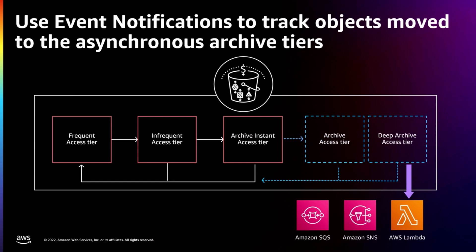We recently launched integration of event notifications with Intelligent-Tiering. You can now have applications that receive events when your objects are moved from a synchronous tier, which is immediately accessible, down to an asynchronous tier. In the media and entertainment industry, it's important to know which assets are immediately accessible and which are not. You can use event notifications when Intelligent-Tiering moves data down to an archive access tier, update your system accordingly, and always know the state of your assets.